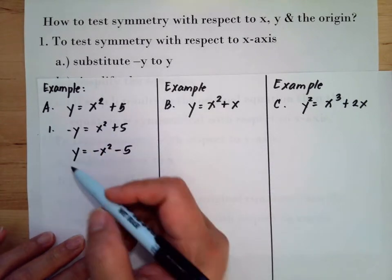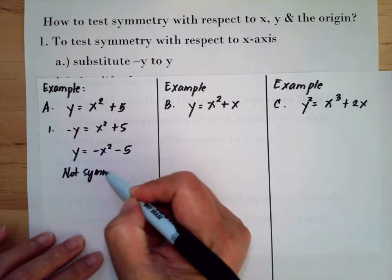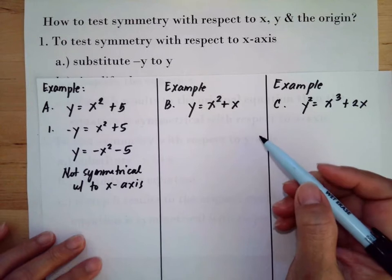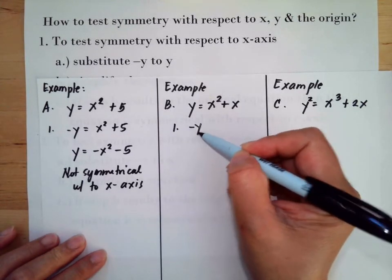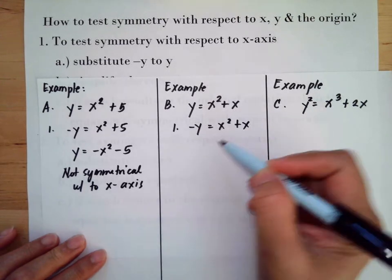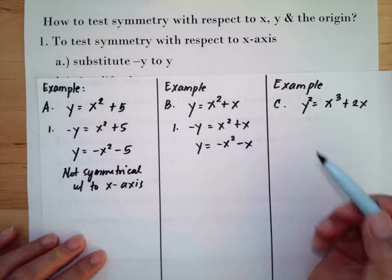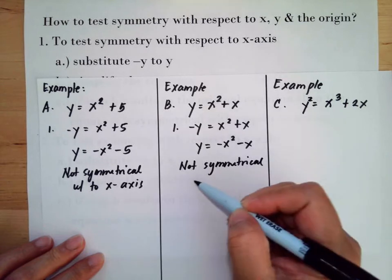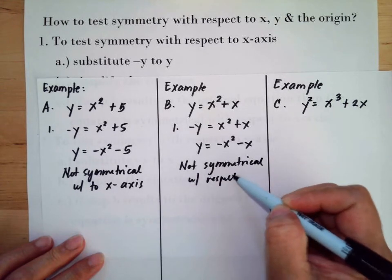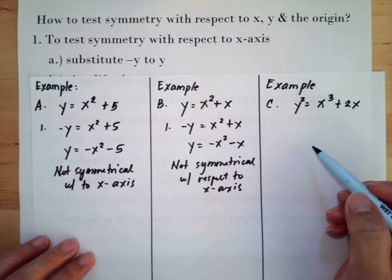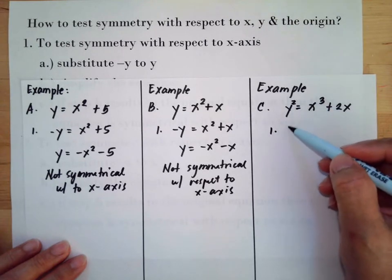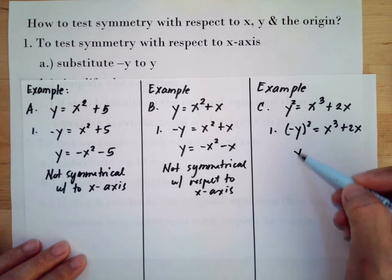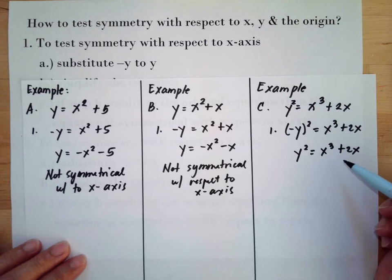The second one — we substitute negative y for y and divide everything by negative. This does not resolve to the same equation, so it is not symmetrical with respect to the x-axis. For the third one, we substitute negative y for y: negative y squared is y squared, and this results in the same equation as given, meaning it is symmetrical with respect to the x-axis.